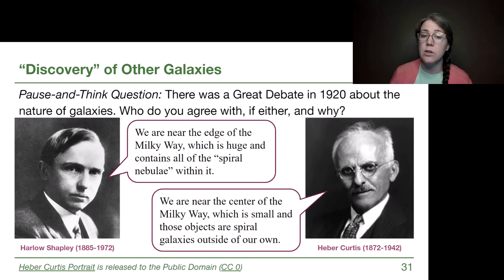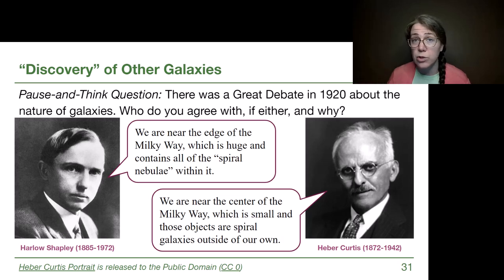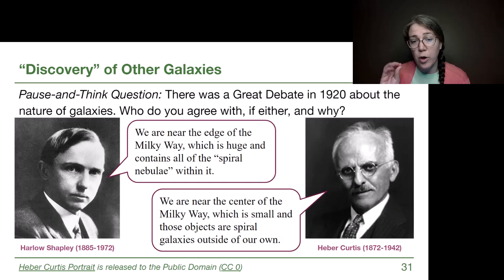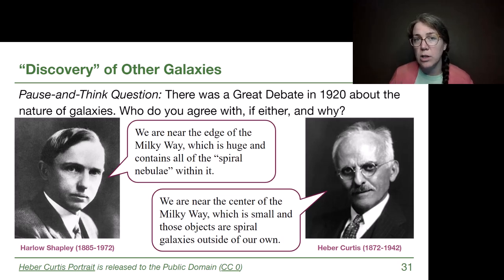Haber Curtis said that we are near the center of the Milky Way, which is small, and those objects are spiral galaxies outside of our own. The sun is not in the central bulge — it is not close to the center — so Curtis didn't agree with Shapley's maps. Although Curtis is correct that the spiral galaxies are outside, he's partially incorrect, so we can't agree with him either. They both have something on track, but we cannot agree with either of these statements.